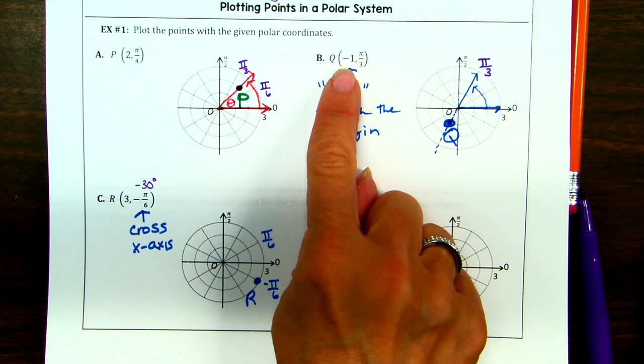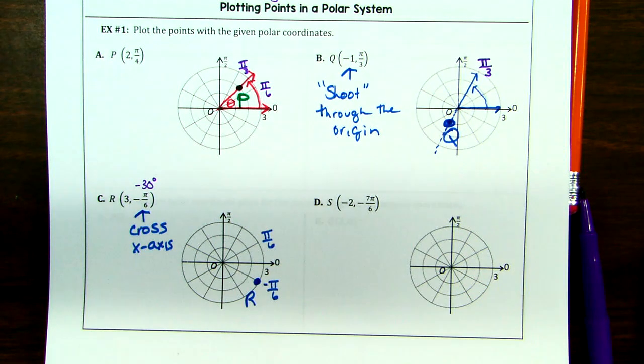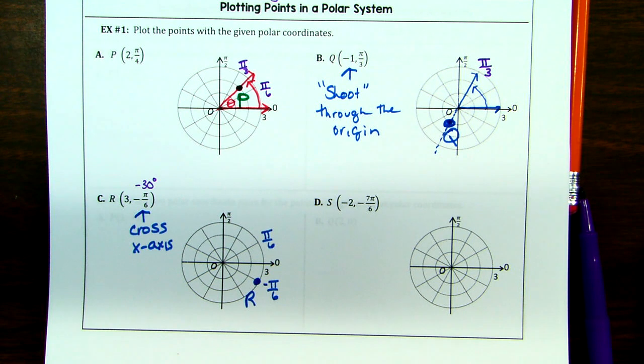If they're both positive, you go right to where it is — you're done. If the radius is negative, you shoot through the origin. And if you have a negative theta, you cross the x-axis.